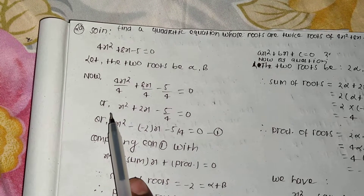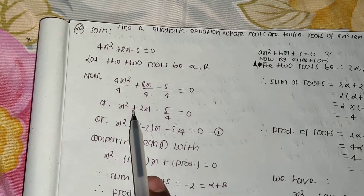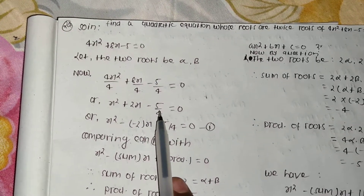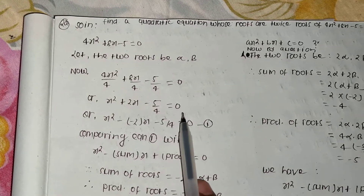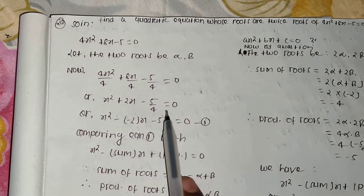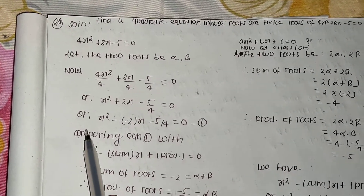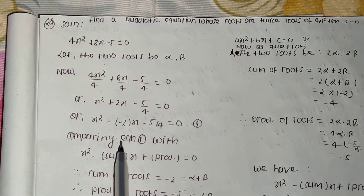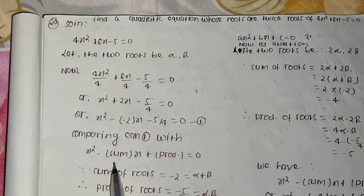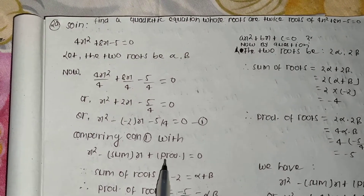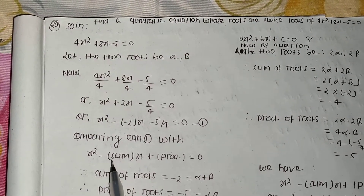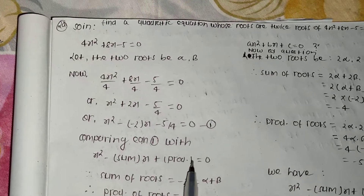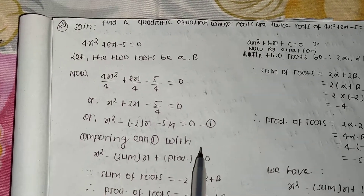The given equation becomes x² + 2x - 5/4 = 0. Now we write this in the standard form: x² - (sum)x + (product) = 0.